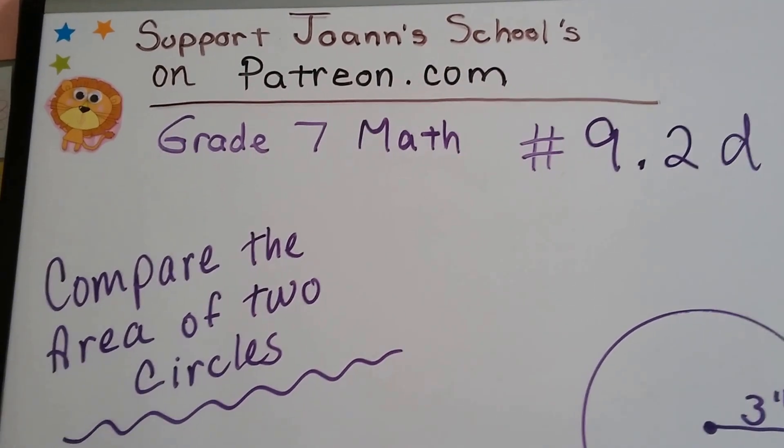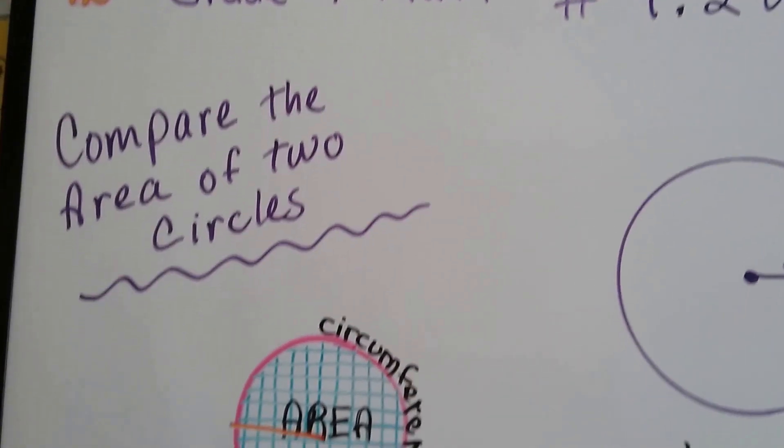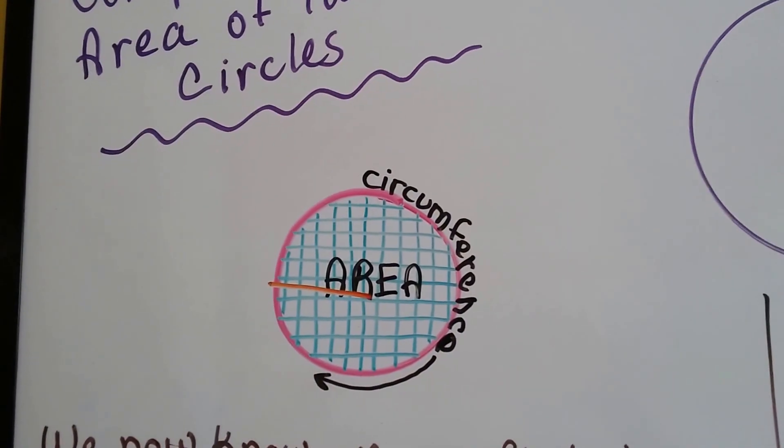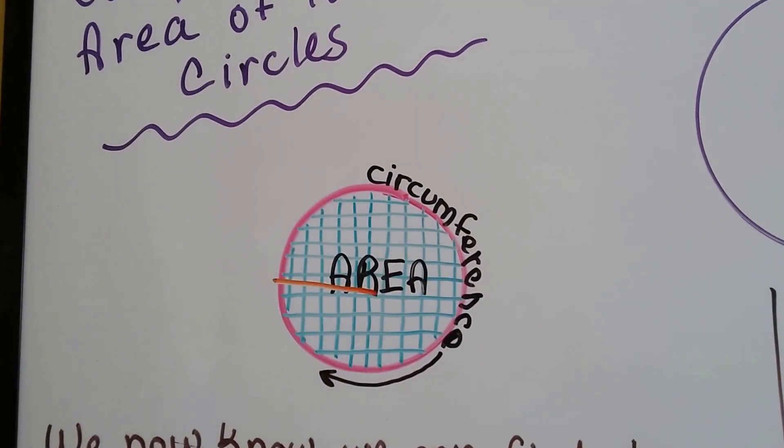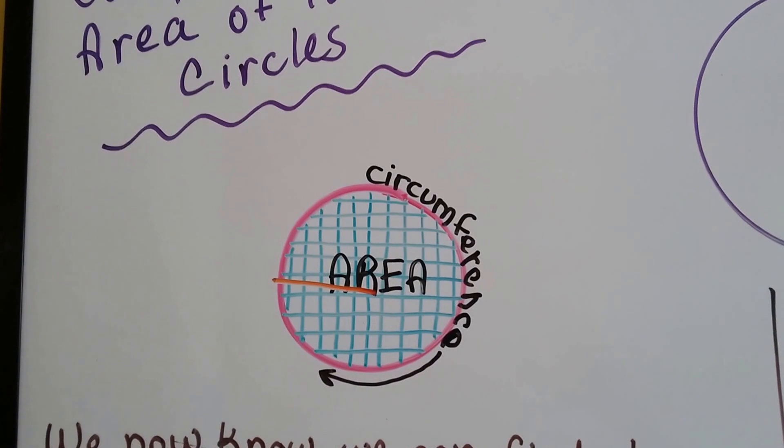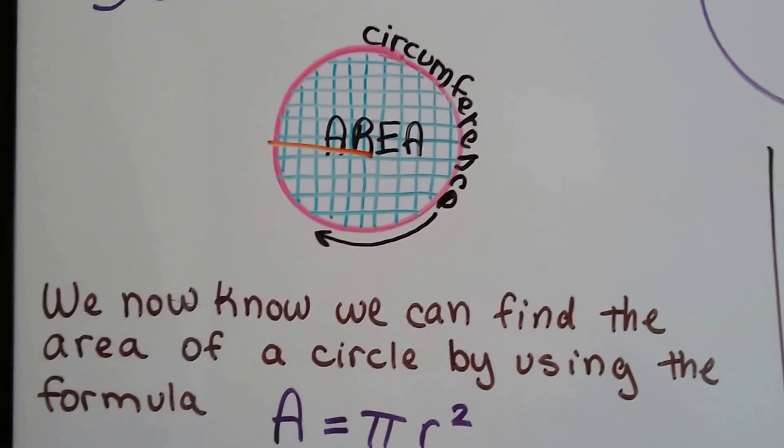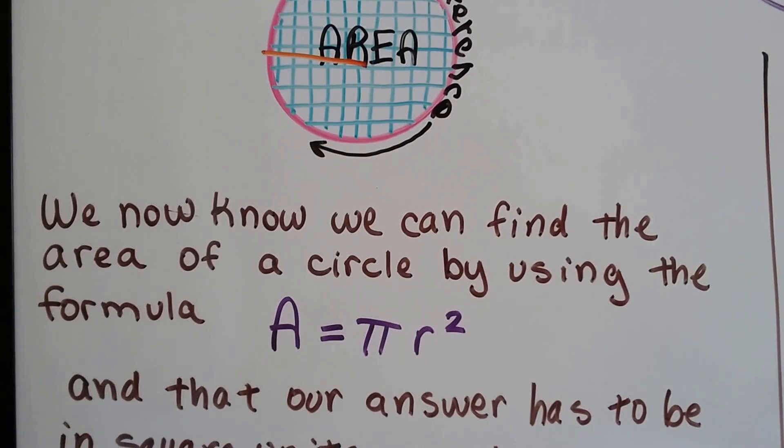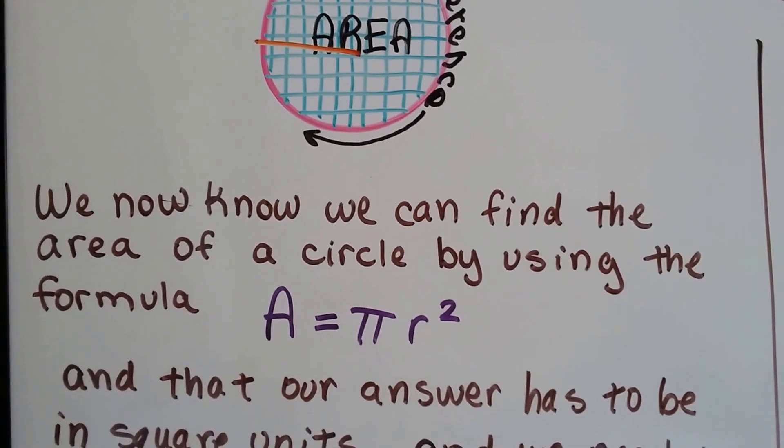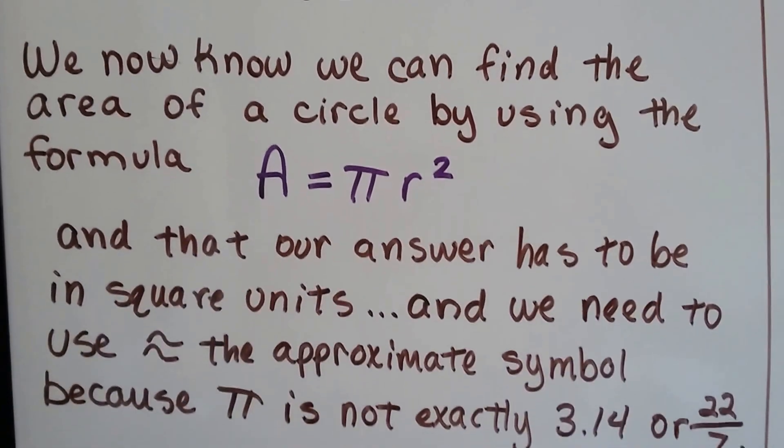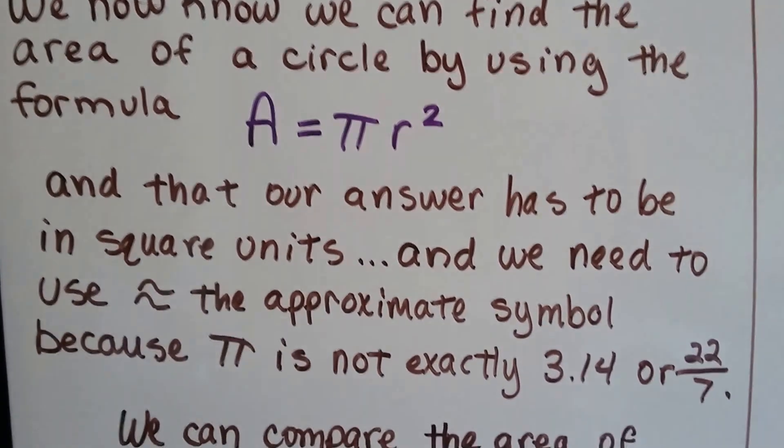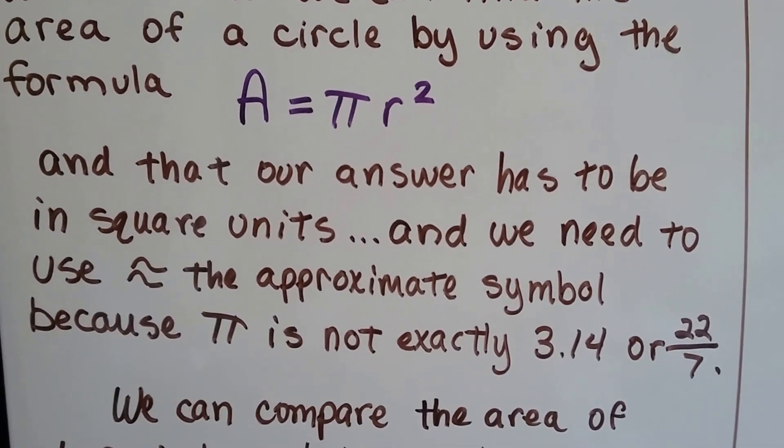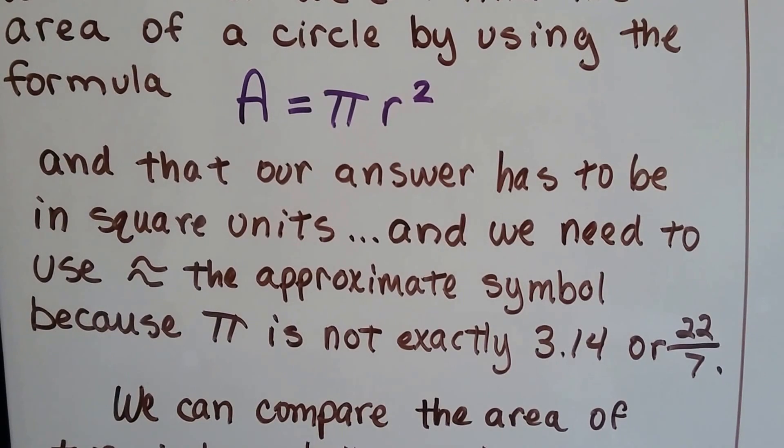Grade 7 math, number 9.2d, compare the area of two circles. Here we have the square unit area of our circle here and the circumference going all the way around the outside edge. We know we can find the area of a circle by using the formula A equals pi times radius squared. And then our answer has to be in square units, and we need to use the approximate symbol because pi is not exactly 3.14 or 22 sevenths.